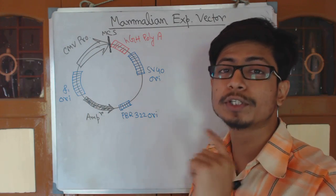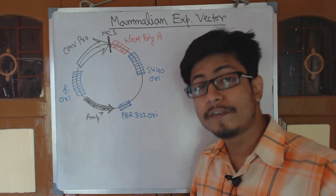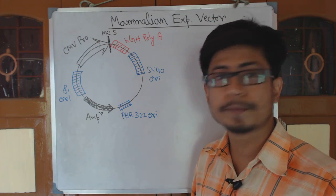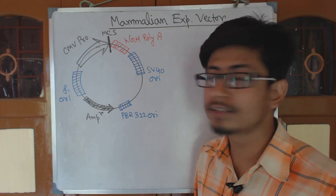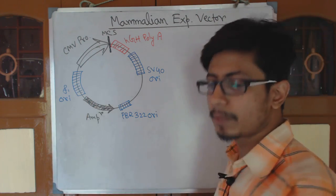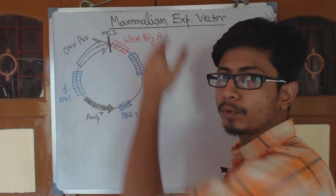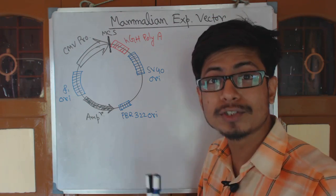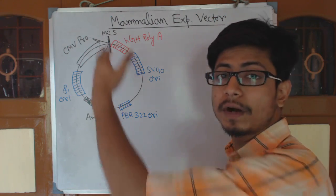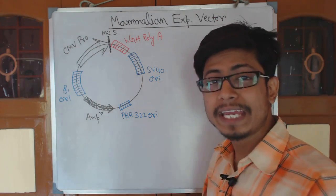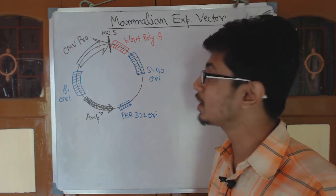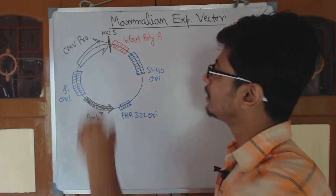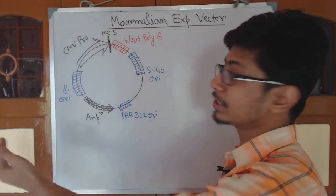An expression vector must have a strong promoter — one that drives high levels of gene expression. Here we have a CMV (cytomegalovirus) promoter, which is found to be a very strong promoter and very effective in animal tissue culture systems. The directionality of transcription is indicated by the arrow.